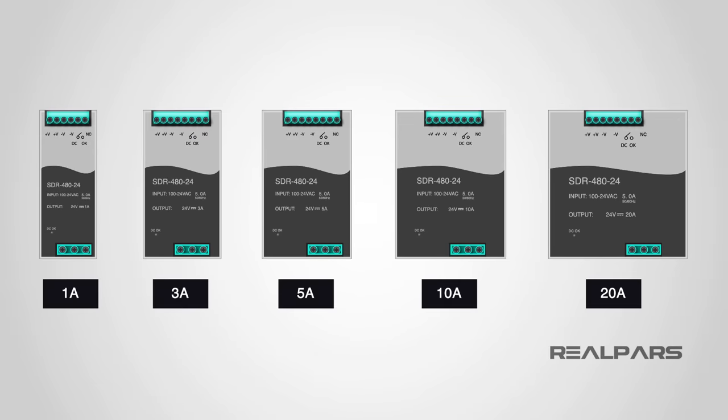We usually size the power supplies based on the amount of current output that we need. For example, we have power supplies with 1A, 3A, 5A, 10A, and 20A output current. The more devices we have, the more current we need, and the bigger the power supply gets. Easy, right?